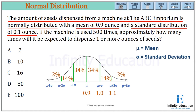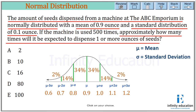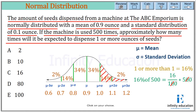We write 0.9 for mu, so the values become 1.0, 1.1, 1.2 on the right and 0.8, 0.7, 0.6 on the left. For one or more ounces, we are looking at the zone from 1.0 upward, which is 14% plus 2% = 16%. So if the machine is used 500 times, 16% of 500 is 16 × 5 = 80. The answer is 80.